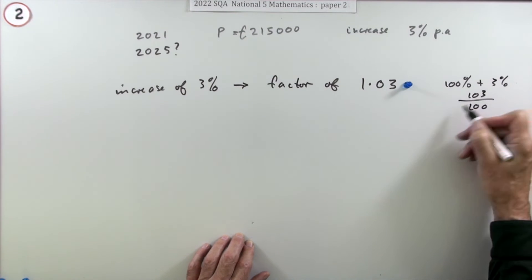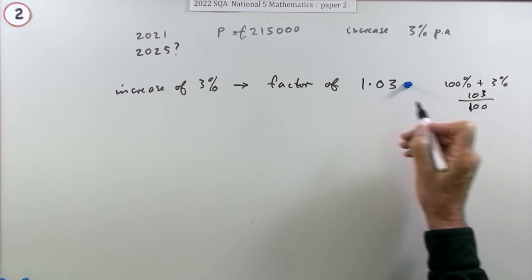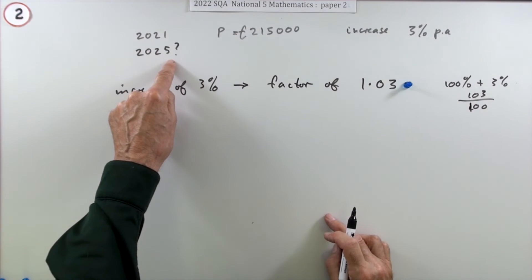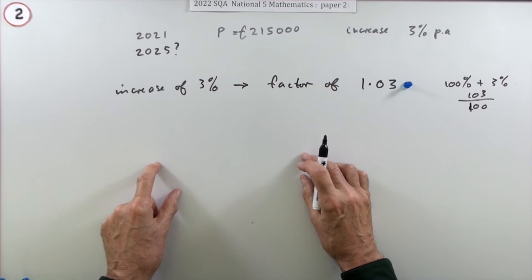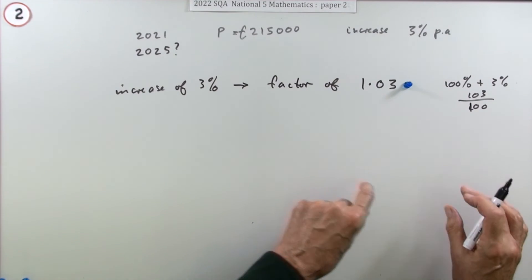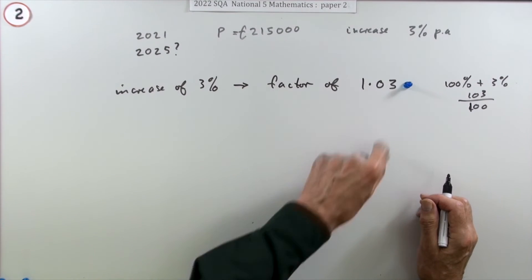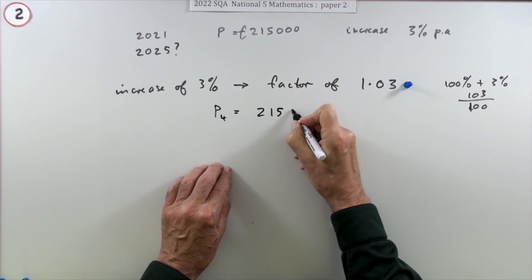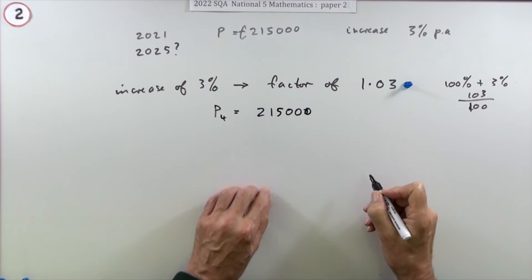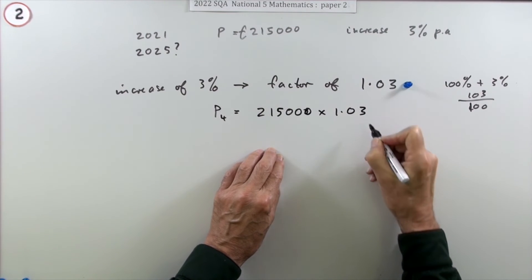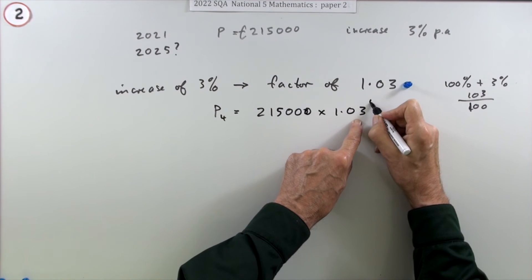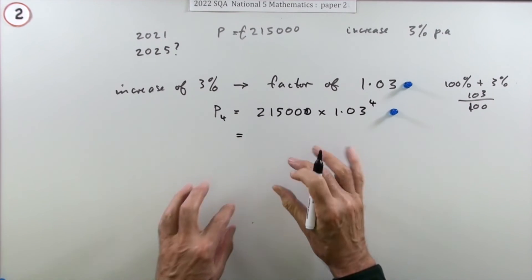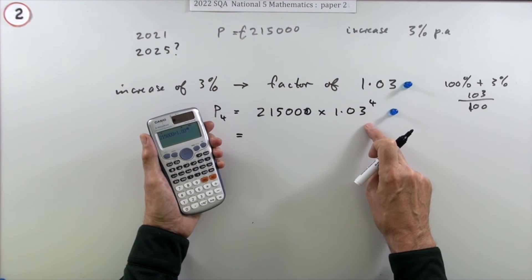You want 1.03 as a decimal fraction because that's easier to put into your calculator. Instead of multiplying by 1.03 four separate times, you can see in one go what the profit would be four years later: whatever it starts as, you multiply by 1.03 four times — that is, 1.03 to the power of 4. Putting this calculation down gets a mark.